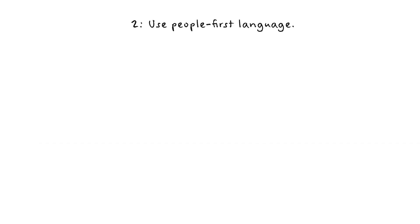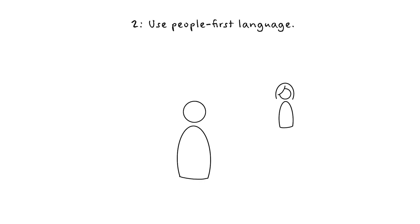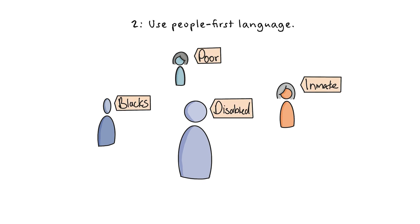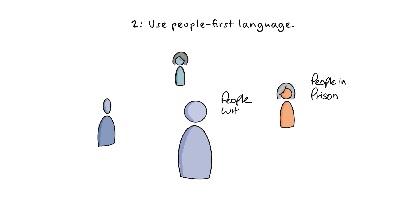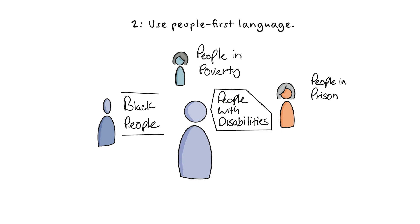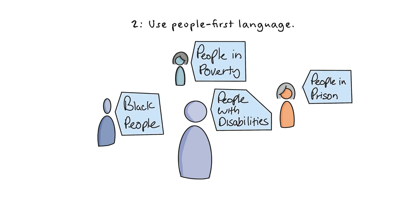2. Use people-first language. If your data is about people, make it extremely clear who they are. Remember the data shown reflect the lives and experiences of real people, and lead with the person, not the characteristic. In visualizations, labels matter. You should strive to use people-first language. Consider 'people with disabilities' instead of 'disabled people', or 'people in prison' instead of 'inmate'.